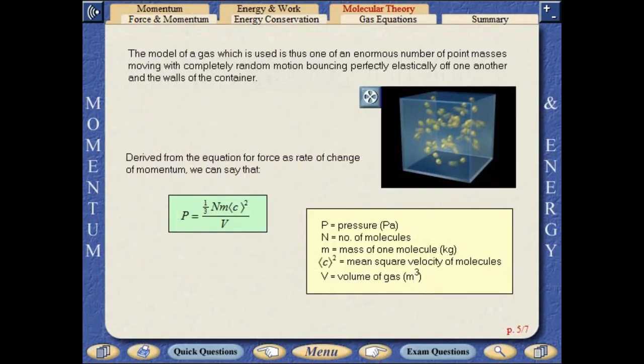The model used assumes a gas to consist of an enormous number of point masses, moving with completely random motion, bouncing perfectly elastically off one another, and the walls of the container.